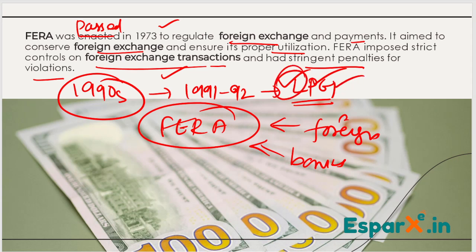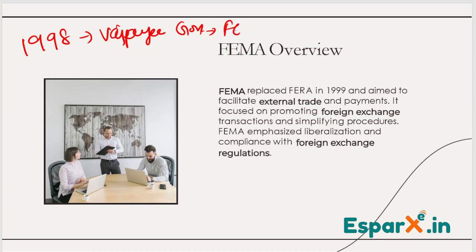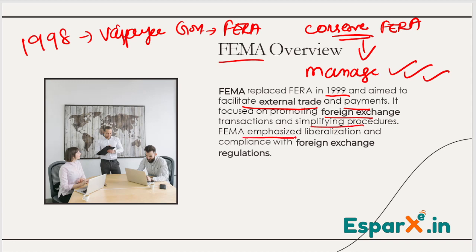To liberalize the economy, the FEMA Act was passed. The Vajpayee government put a ban on the FERA Act and replaced it with the FEMA Act in the year 1999, to facilitate external trade and payment. The focus shifted from conservation to promotion and management of foreign exchange — simplifying procedures. FEMA emphasized liberalization and compliance with foreign exchange regulations.